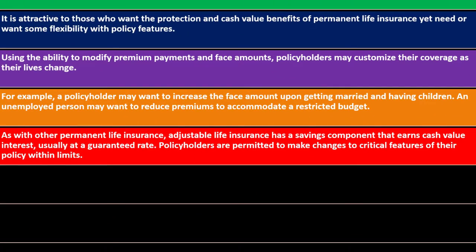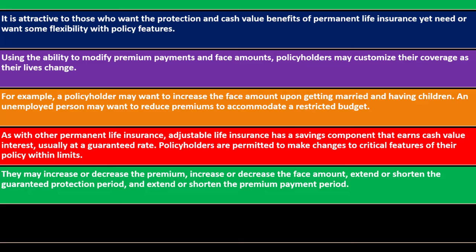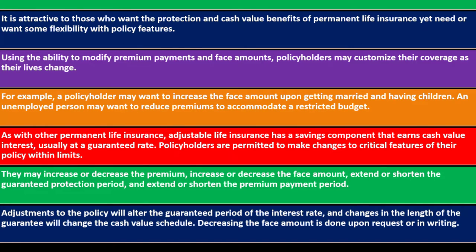As with other permanent life insurance, adjustable life insurance has a savings component that earns cash value interest, usually at a guaranteed rate. Policyholders are permitted to make changes to critical features of their policy within limits: increase or decrease the premium, increase or decrease the face amount, extend or shorten the guarantee protection period, and extend or shorten the premium payment period. Adjustments to the policy will alter the guarantee period of the interest rate, and changes in the length of the guarantee will change the cash value schedule.